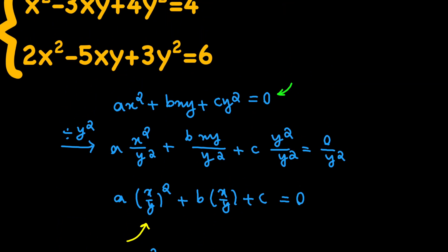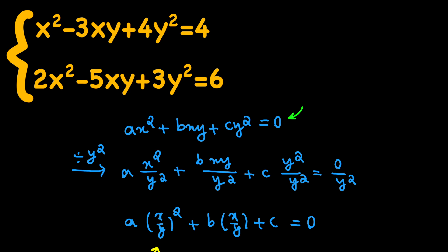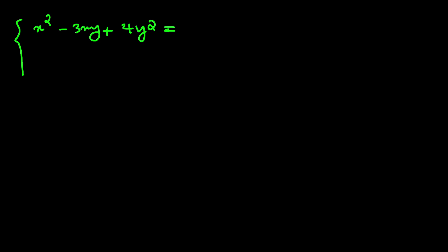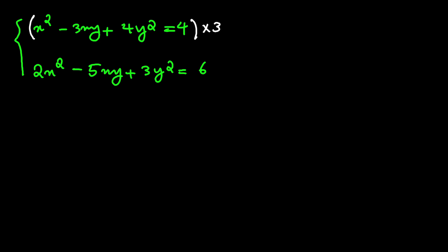The special thing about the trick is that the right-hand side must be 0, but in our system the right-hand sides are 4 and 6. So we need to do something smart to get zeros on the right-hand side. We have x squared minus 3xy plus 4y squared equals 4, and 2x squared minus 5xy plus 3y squared equals 6. I'm going to multiply the first equation by 3 to get 12 on the right-hand side, and multiply the second equation by 2 to get 12 on the right-hand side, and then subtract one from the other to get 0.